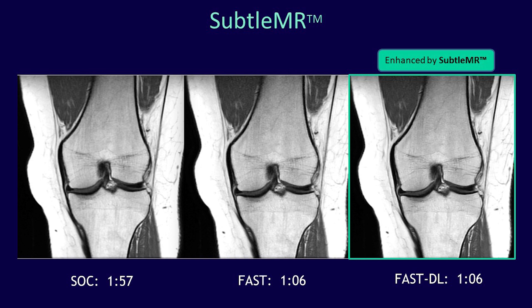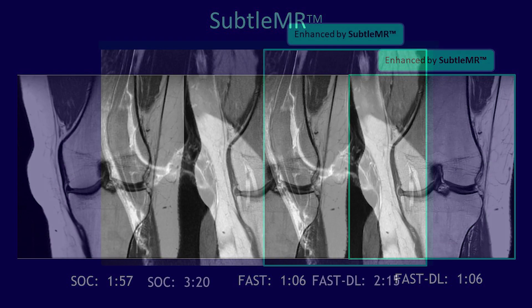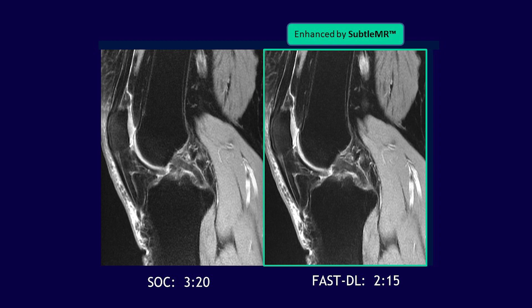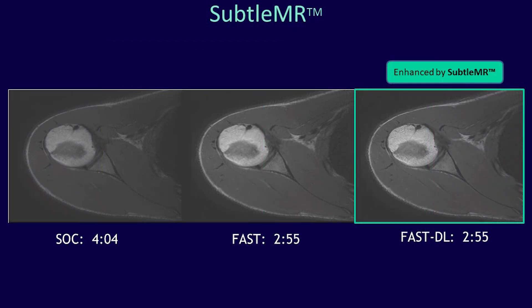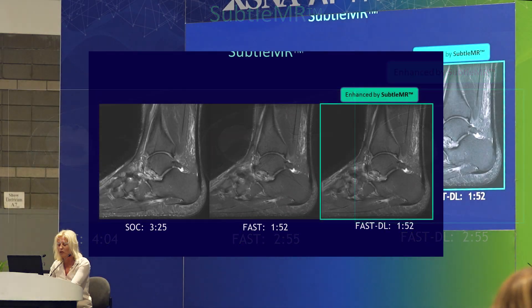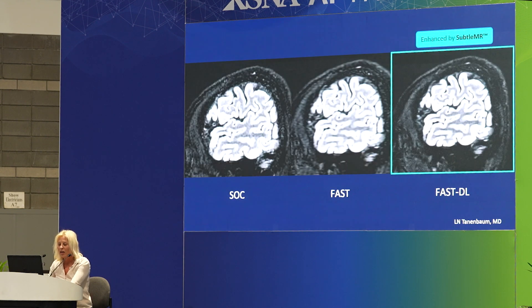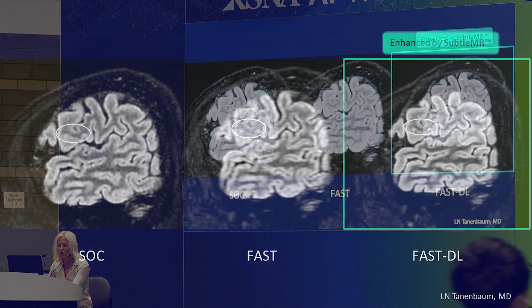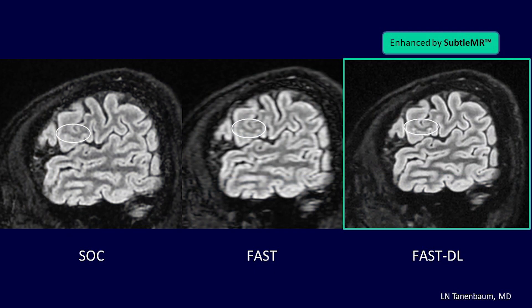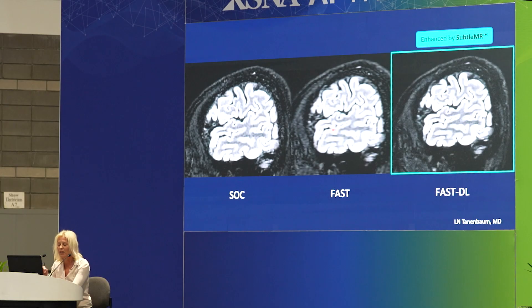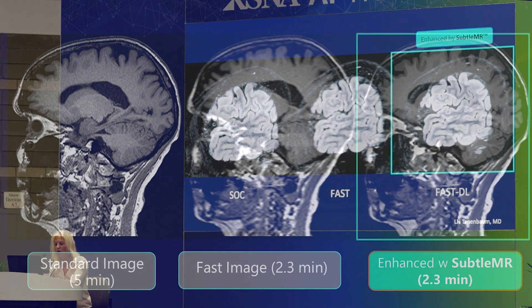This can be applied to any body part — here's an example of a knee, the fast DL knee on the right. Here's another example of a knee — look how beautiful this image is. Here's a shoulder, fast DL on the right hand side. And here's an example of a foot — see this artifact? It's gone on the fast DL. When you move faster, it decreases motion artifact. I like this example because you see there are two little white matter foci — almost imperceptible on the standard of care. When we go fast, you get a bump in that contrast to noise ratio. Apply fast DL and they're very conspicuous — you can see how something like that can be useful in patients with multiple sclerosis.